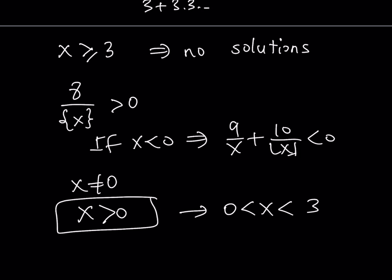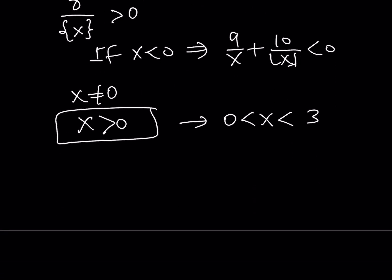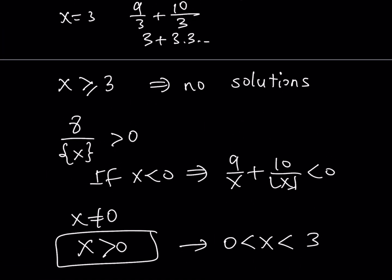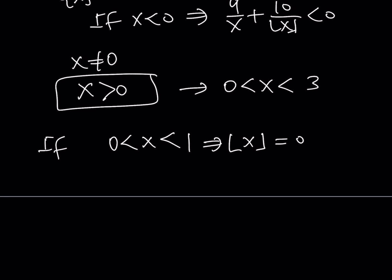It makes sense to break the interval (0, 3) into sub-intervals. Case 1: if x is between 0 and 1, then the floor value of x is going to be 0, which makes the expression 10 over the floor value of x undefined. So x cannot be between 0 and 1 — this case does not work.